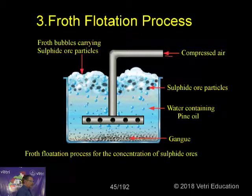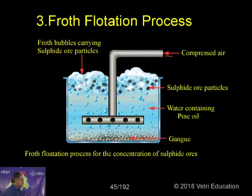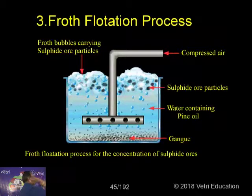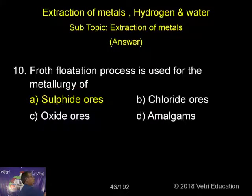The ore particles, contaminated with oil, will float over the top, while the impurities in the form of gangue will settle at the bottom. From the top, we can separate the sulfide ore particles. This process is called froth flotation process and it is suitable for sulfide ores.